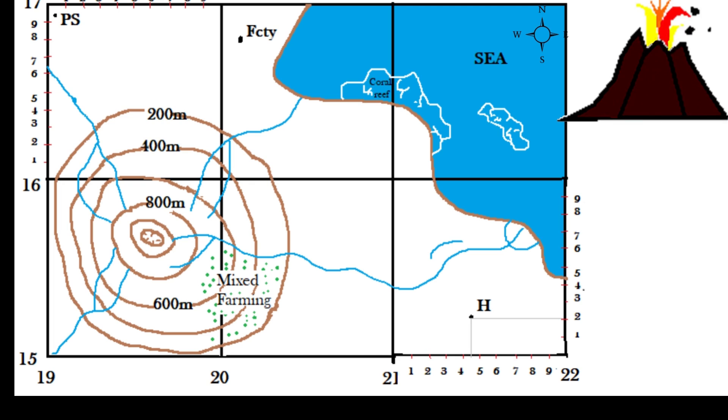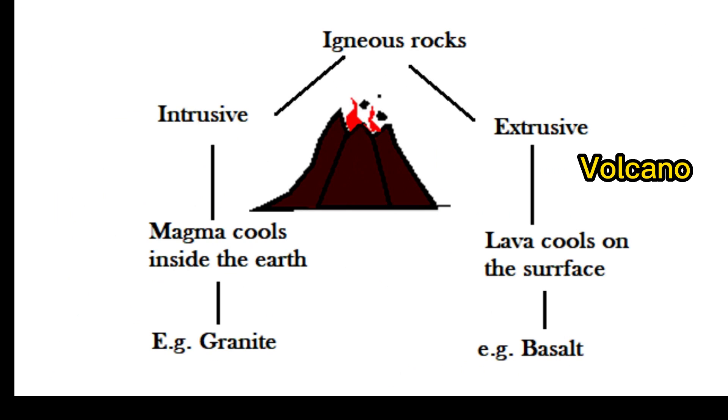Now volcanoes are formed by the cooling of molten rocks which means that they are made of igneous rocks. Igneous rocks can be classified into intrusive and extrusive igneous rocks. Intrusive igneous rocks form inside of the crust as a result of magma cooling while extrusive igneous rocks are formed at the surface as a result of lava cooling.